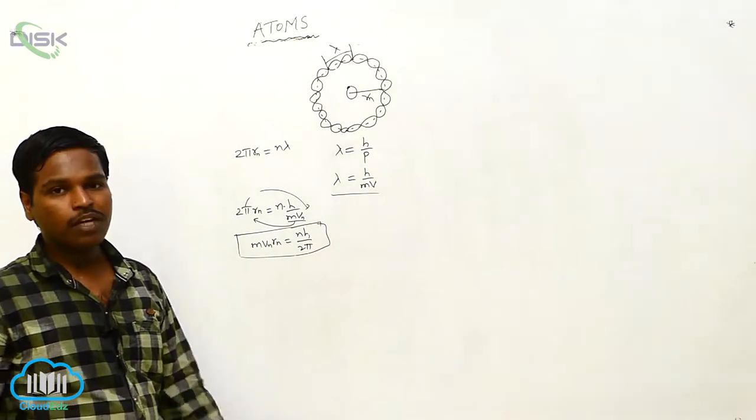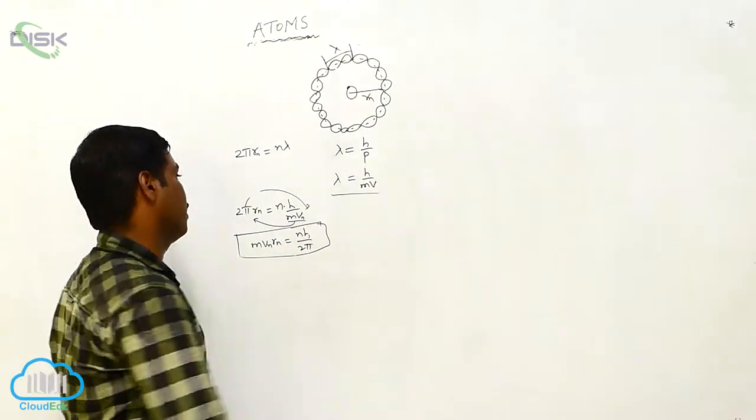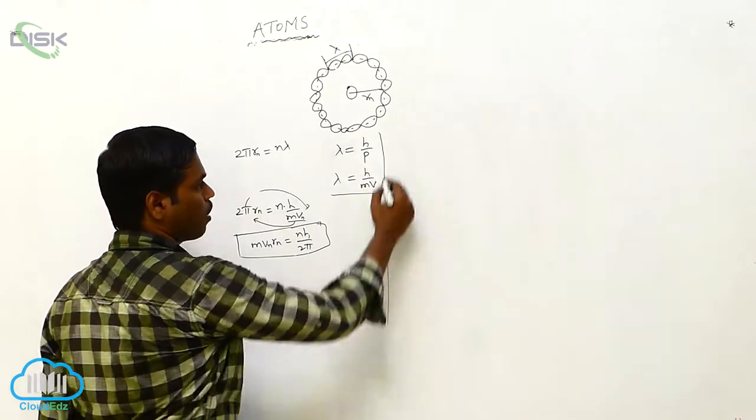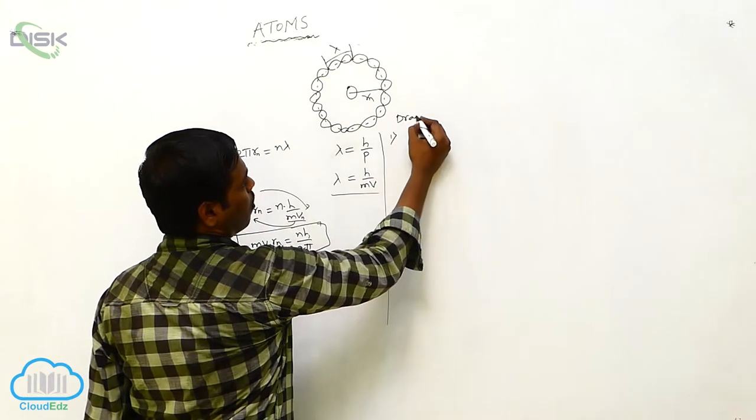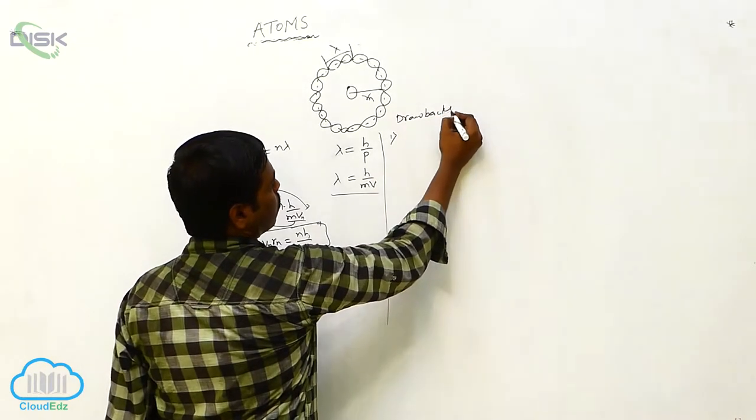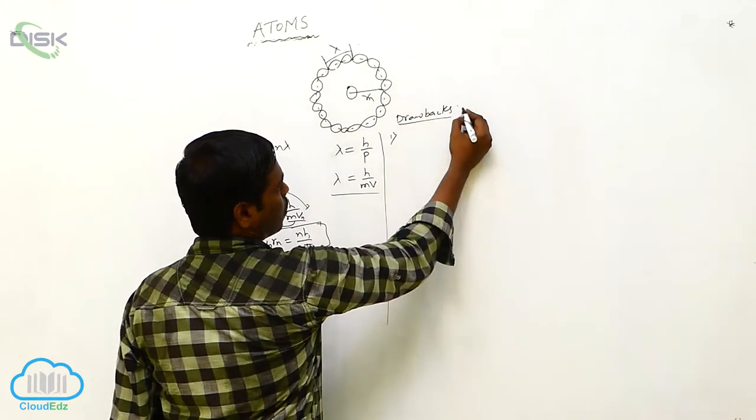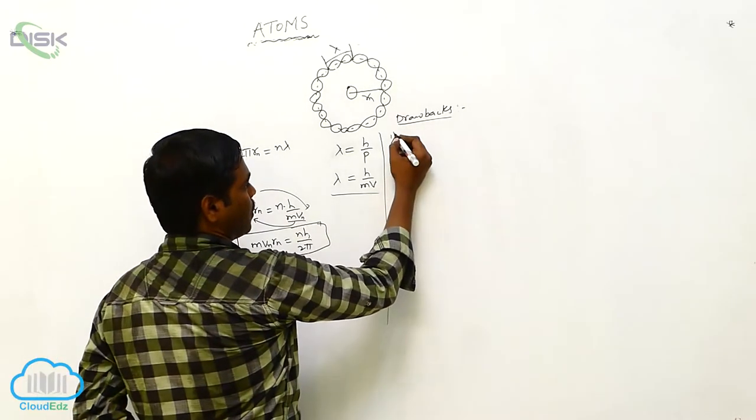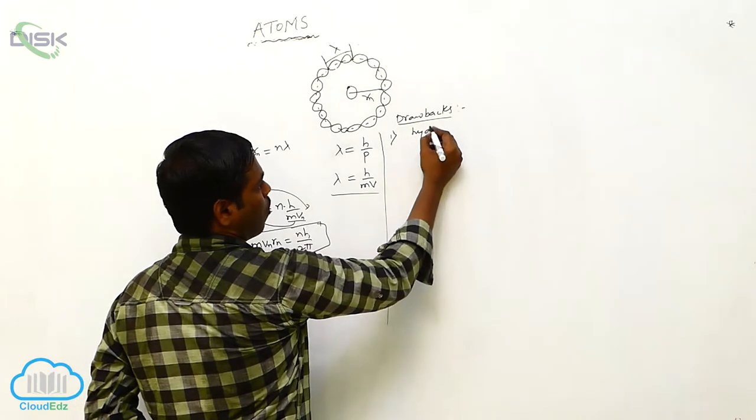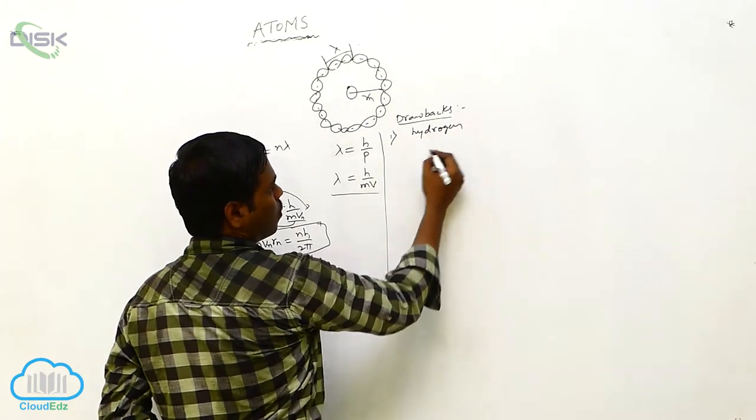Bohr's atomic model has some drawbacks. This model is applicable only for single electron atoms, that is, the hydrogen atom.